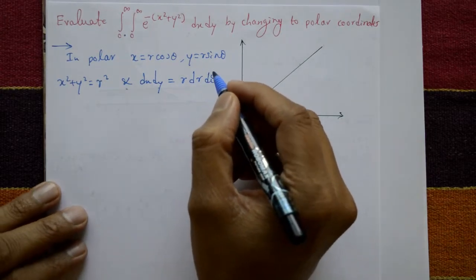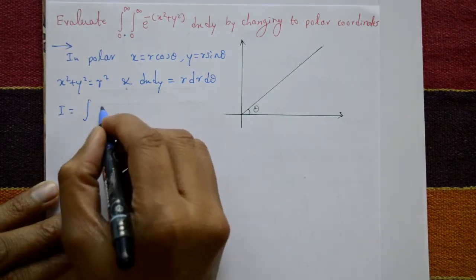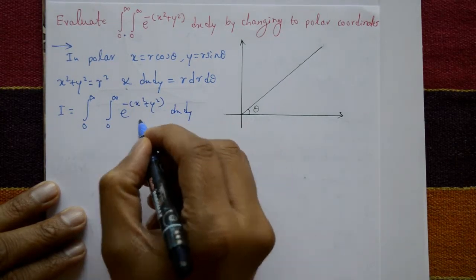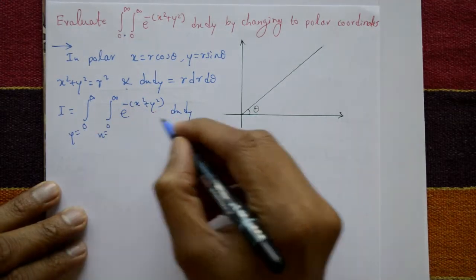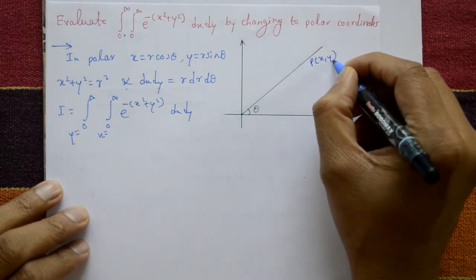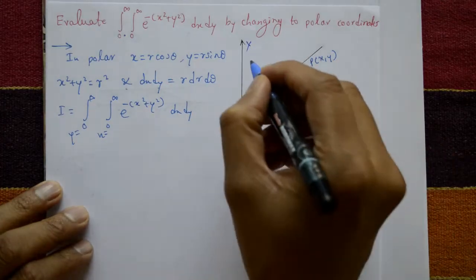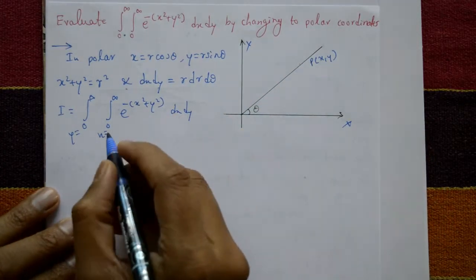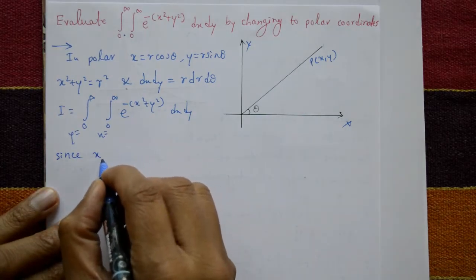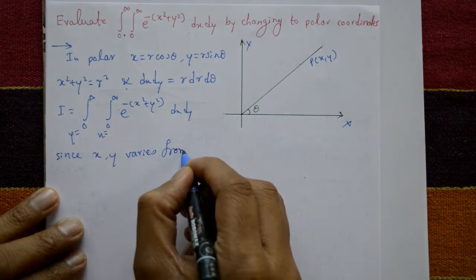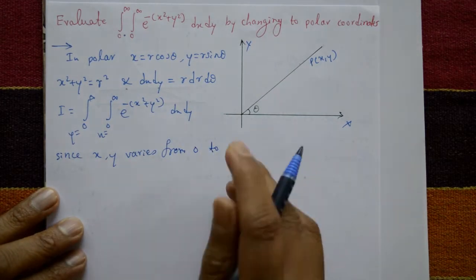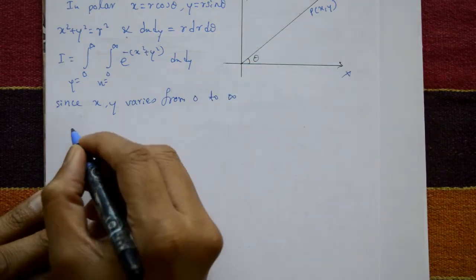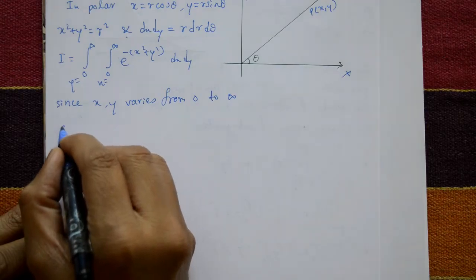So I equals integration of 0 to infinity, integration of 0 to infinity, e to the power minus x square plus y square, dx dy. Since x and y vary from 0 to infinity, both are positive, meaning the region is the first quadrant where x and y are both positive.